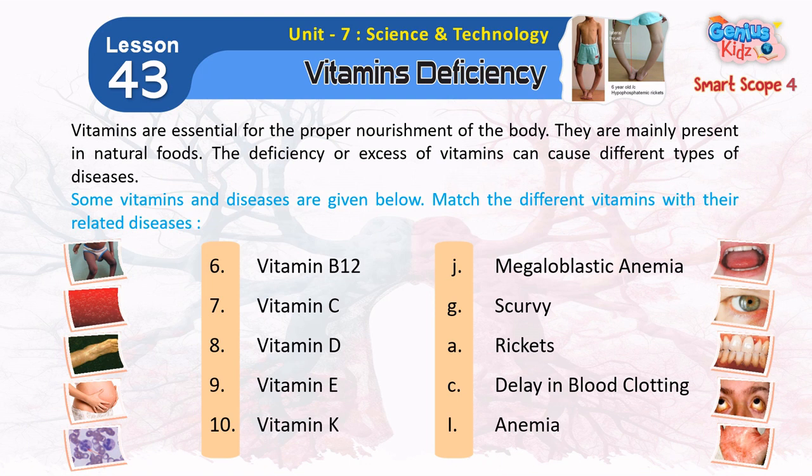7. Vitamin C — G. Scurvy. 8. Vitamin D — A. Rickets. 9. Vitamin E — C. Delay in Blood Clotting.